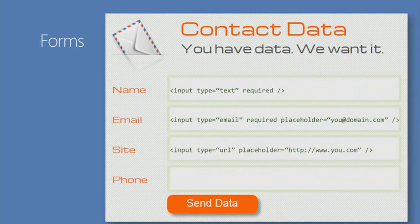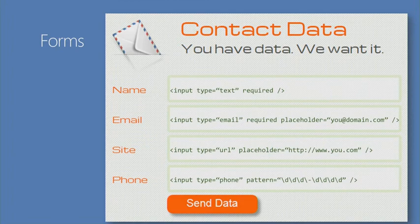You can do the same thing with site using type URL. And with phone, in addition to all the things we've talked about — marking it required, adding placeholders — we can actually provide a pattern attribute. You can see on screen what's in that pattern — it looks like a phone number regex.